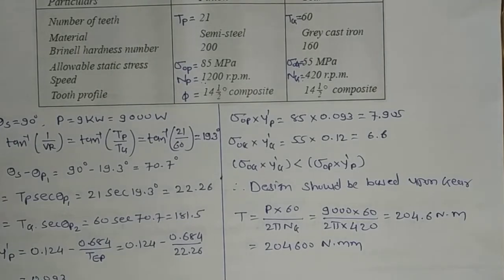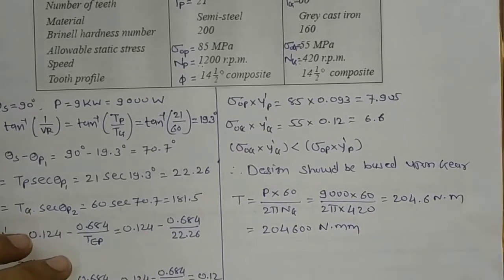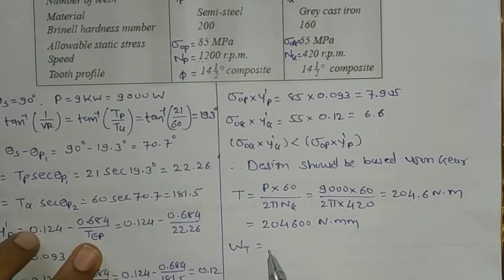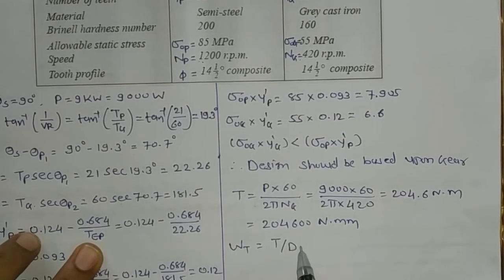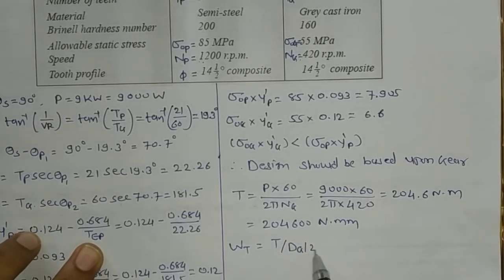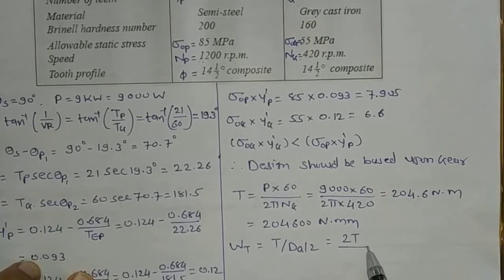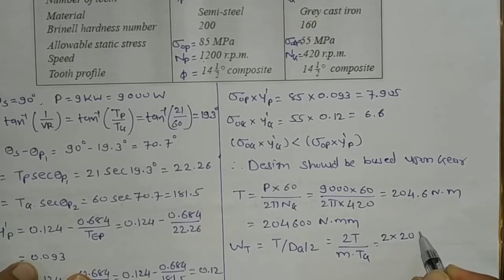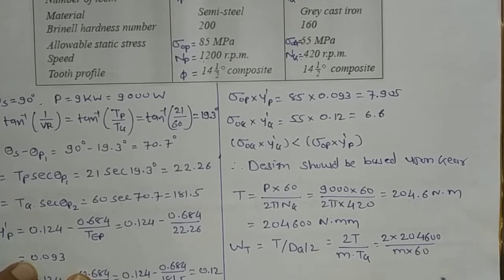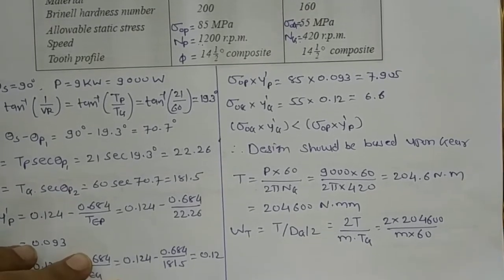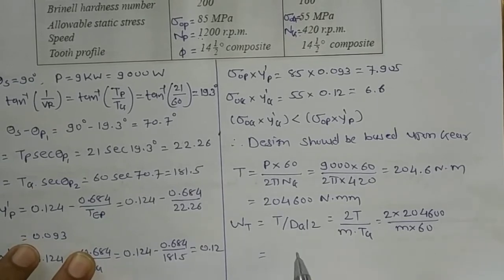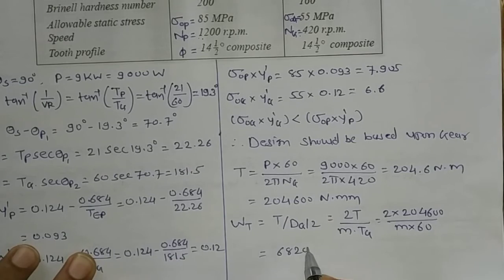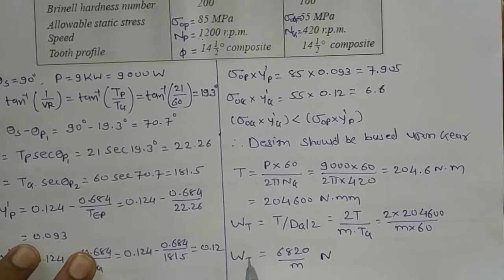Now let us find the tangential load Wt. Tangential load Wt equals torque divided by radius, and radius equals Dg by 2, so Wt equals 2T divided by Dg, where Dg equals m into Tg. Substituting, Wt equals 2 into 204,600 divided by m into 60, giving tangential load Wt equal to 6820 divided by m Newton.